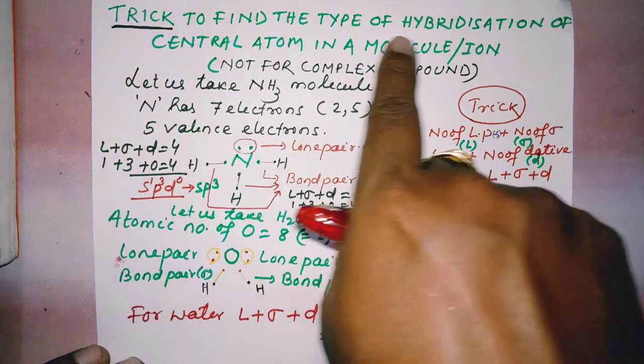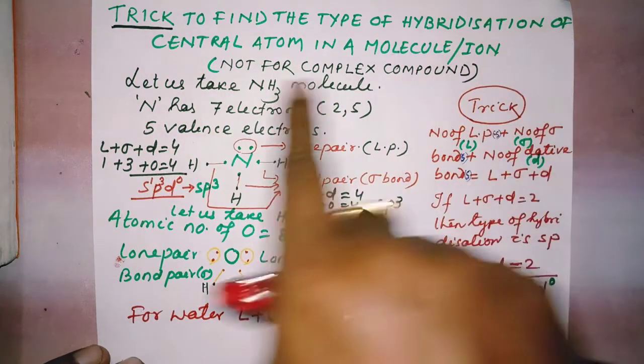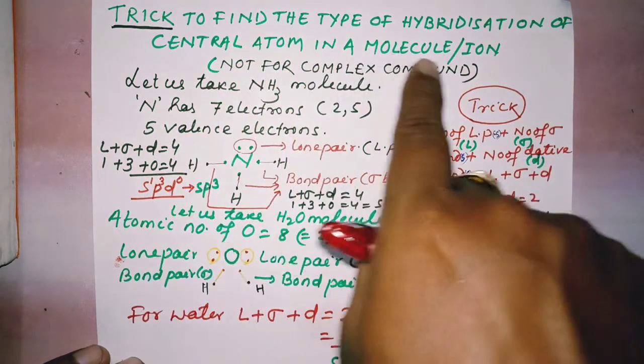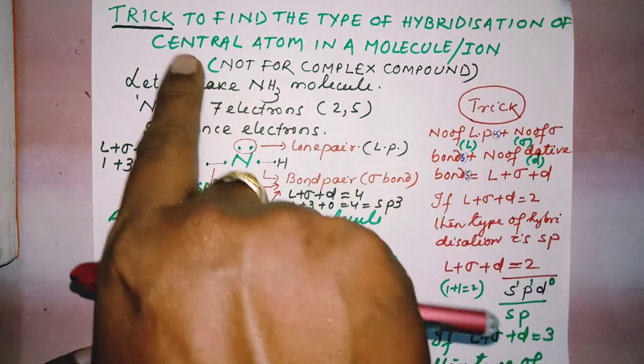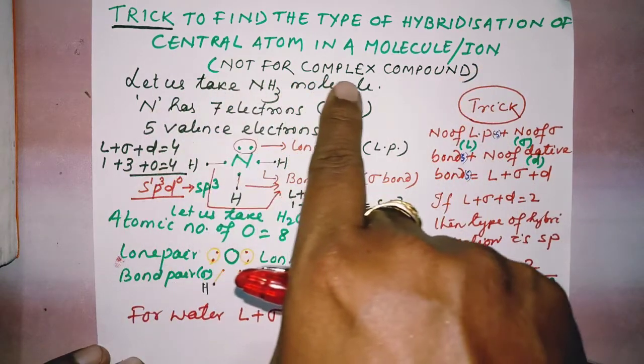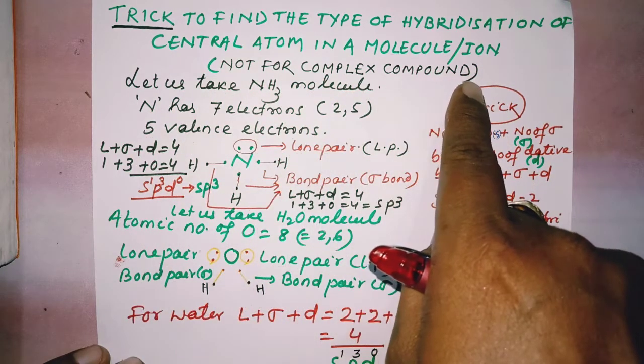Trick to find the type of hybridization of the central atom in a molecule or ion. Note that this trick is not applicable for complex compounds.